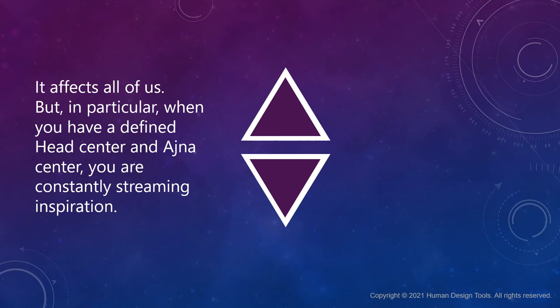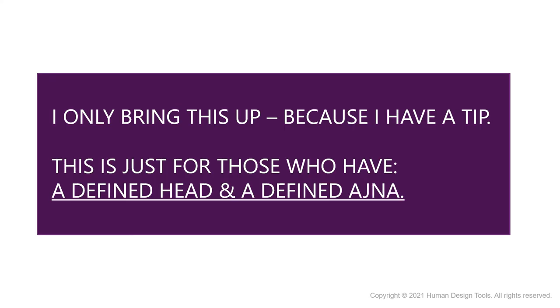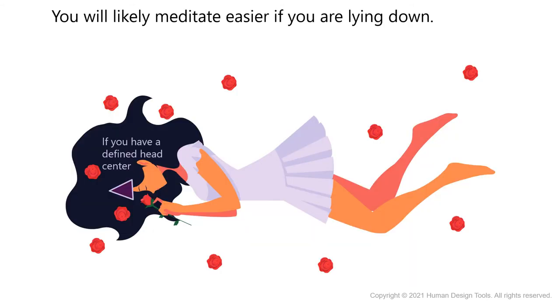This affects all of us, but in particular when you have a defined head center and ajna center, you're constantly streaming in this inspiration. I bring this up because I have a tip specifically for those with a defined head and defined ajna. If you have a defined head, you'll automatically have a defined ajna — so if your head center is colored in on your chart, you will likely meditate more easily lying down. I know we're told not to lie down when we meditate, and that's true for most people, but there's one eighth of the population with a defined head center for whom lying down makes meditation easier, based on the mechanics of how that center works.